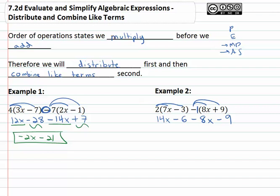Now that the parentheses are gone, we can combine like terms. The x's, 14x minus 8x gives us 6x, and finally, negative 6 and negative 9 gives us negative 15. And so 6x minus 15 becomes our simplified final answer, from distributing first and combining like terms second.